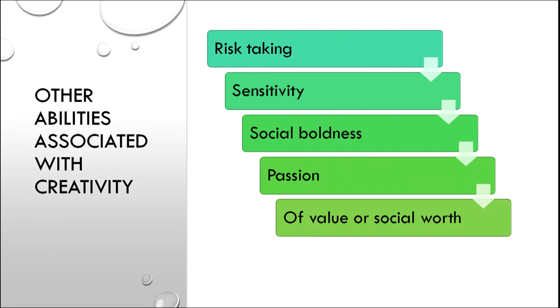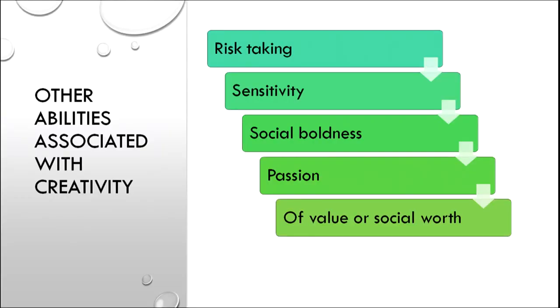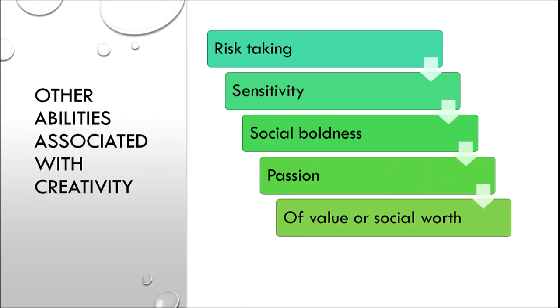Sensitivity is how you can see the details in your environment — not merely sympathizing, but understanding cognitively your environment and the people in it. Social boldness is a psychological and social courage where you are able to go and talk to people who you believe are higher in authority, despite certain societal norms and hierarchies. Passion is the love for a particular area or topic — you want to pursue a particular task for a long time not because you will get something out of it, but just because you are in love with it. Of value or social worth is also very important — whatever we are pursuing, how it is going to benefit the society or the community around us.